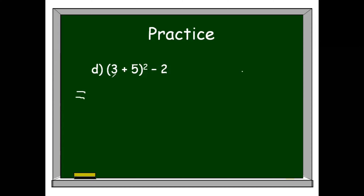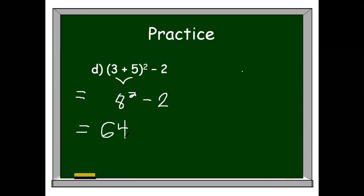We have parenthesis, so we simplify the numbers inside the parenthesis. We perform addition of 3 and 5: 3 plus 5 gives us 8. Don't forget to copy the remaining components: squared and minus 2. Next, we simplify 8 squared. The exponent is 2 and the base is 8, meaning we multiply 8 twice: 8 times 8 equals 64. Then we subtract 2: 64 minus 2 is equal to 62.